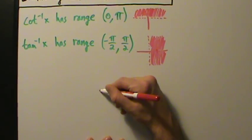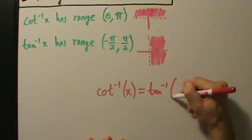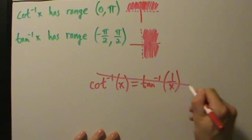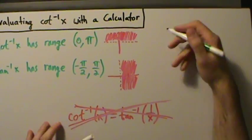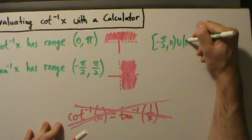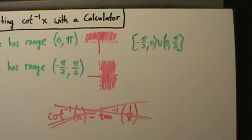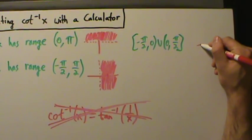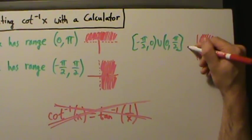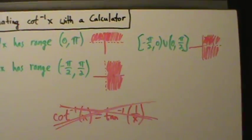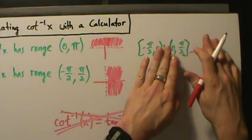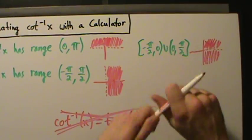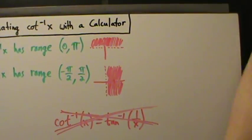Based on the approach from the previous two videos, the result we might expect — that inverse cotangent of x equals inverse tangent of 1 over x — is actually not true in general, not the way we defined this inverse cotangent function. Now, some people do define the inverse cotangent function to have range negative π/2 to 0 union 0 to π/2. If we defined it that way, the graphs would match up with the inverse tangent, but we didn't define it that way, so we're not going to go down that road.